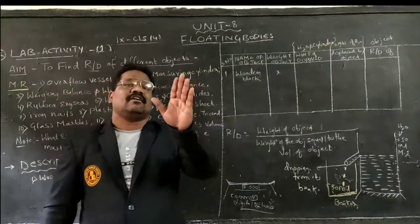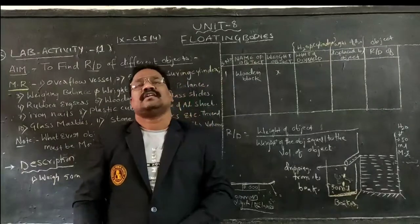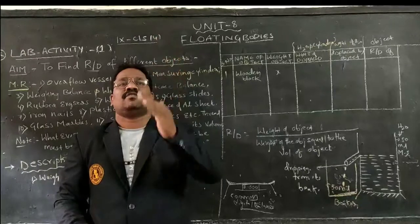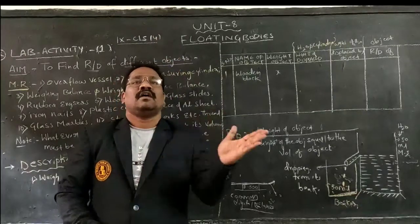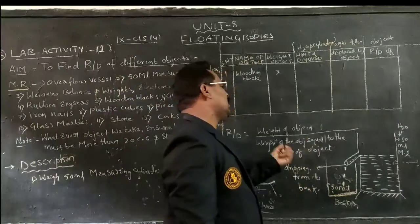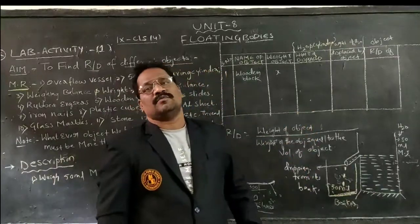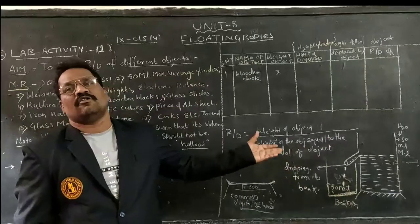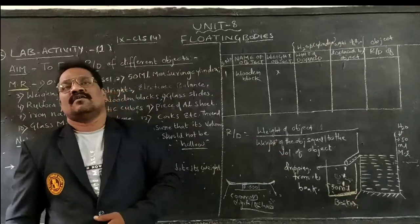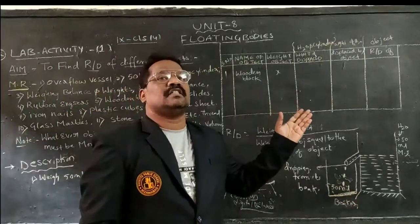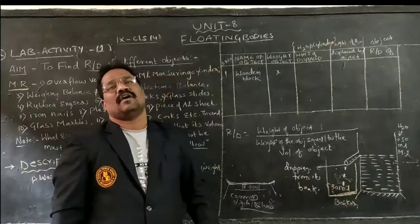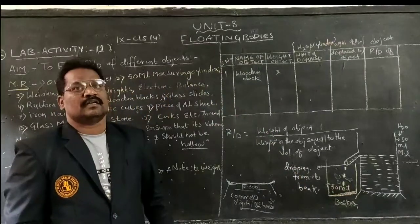Relative density is the density of an object divided by the density of water. If we expand this, it becomes the weight of the object divided by the weight of an equal volume of water. So relative density equals density of object by density of water — that is the formula.